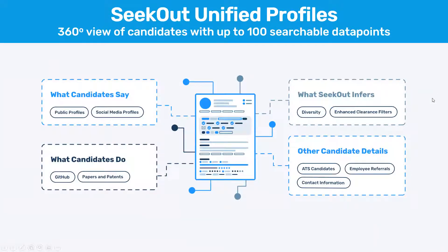A quick overview of what we do at SeekOut: we provide a 360-degree view of candidates. Looking across the open web, there are things candidates say on their public profiles, social media, and LinkedIn. SeekOut can also infer things — for example, we'll look at a candidate's work history to determine if they have an enhanced security clearance, even if they don't say so on their profile.